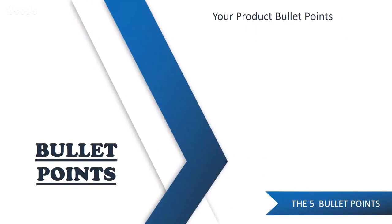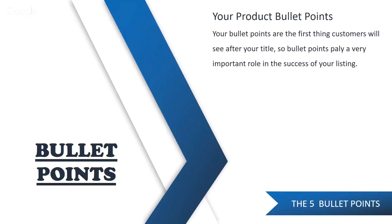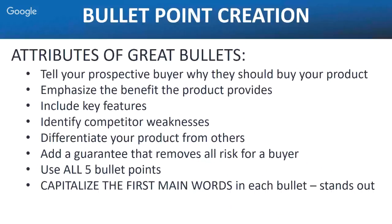Now let's talk about bullet points. There are five bullet points, and they're the first thing the customer will see after your title. They should play a very important role in the success of your listing. A great bullet point tells your prospective buyer why they should buy your product. Emphasize the benefit the product provides — remember, we're selling a solution to their problem. We're not selling the copper itself, we're selling pain relief.